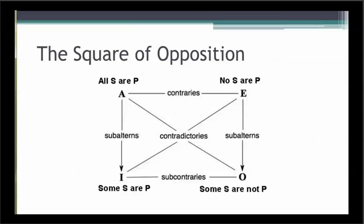The square of opposition is also a way to visually display the relationships among the four types of claims. Here is the square with the relationships between claims labeled. A and E are contraries, and at the bottom of the square I and O are subcontraries. A and I are subalterns, and so are E and O. The terms that are diagonal to one another are called contradictories. The important point isn't just learning the name of these relationships, but understanding what we can infer about other claims if we know the truth value of one of them.